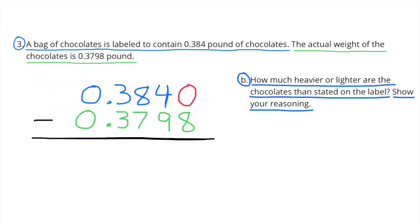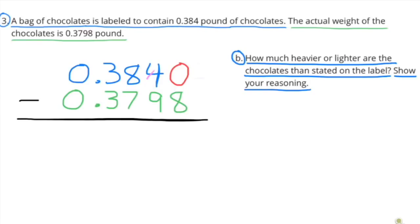B. How much heavier or lighter are the chocolates than stated on the label? I'm going to subtract the smaller number from the larger number: 3,840 ten-thousandths minus 3,798 ten-thousandths. The weight stated on the bag is 384 thousandths, which is actually heavier than the actual chocolates inside the bag. The difference is 42 ten-thousandths.